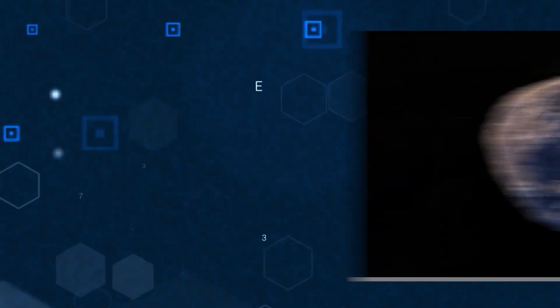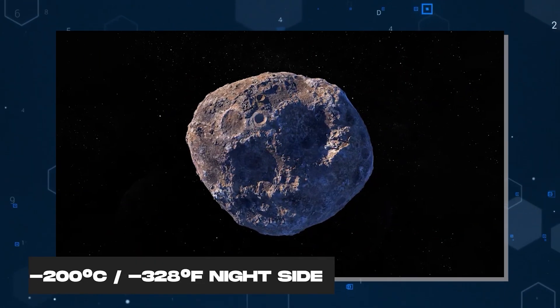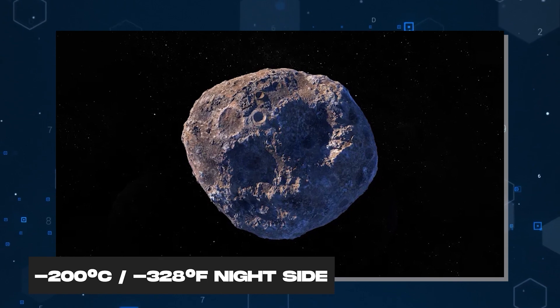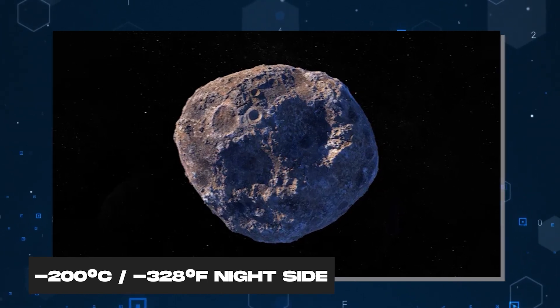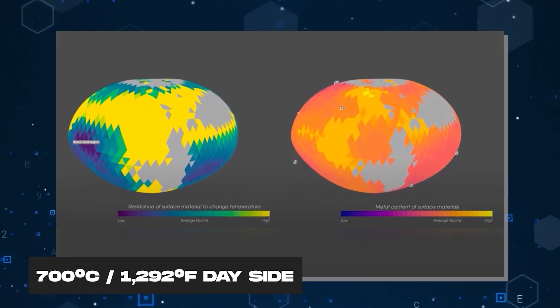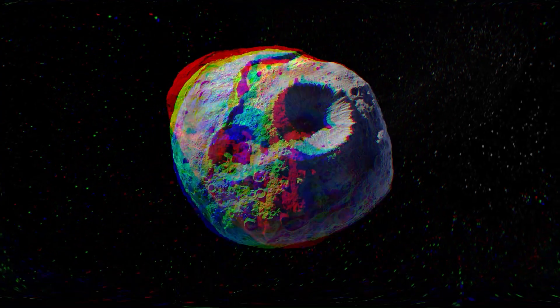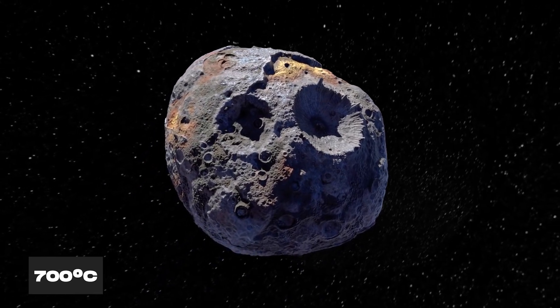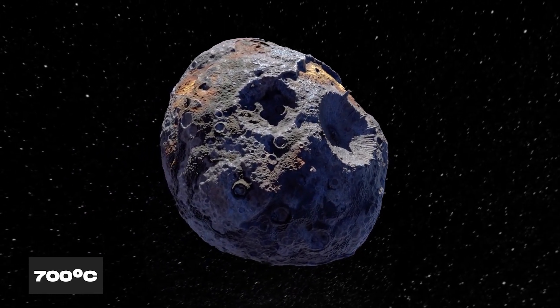Well, according to NASA, Psyche's surface temperatures range from minus 200 degrees Celsius or minus 328 degrees Fahrenheit on the night side to 700 degrees Celsius or 1,292 degrees Fahrenheit on the day side. That's right, 700 degrees Celsius.